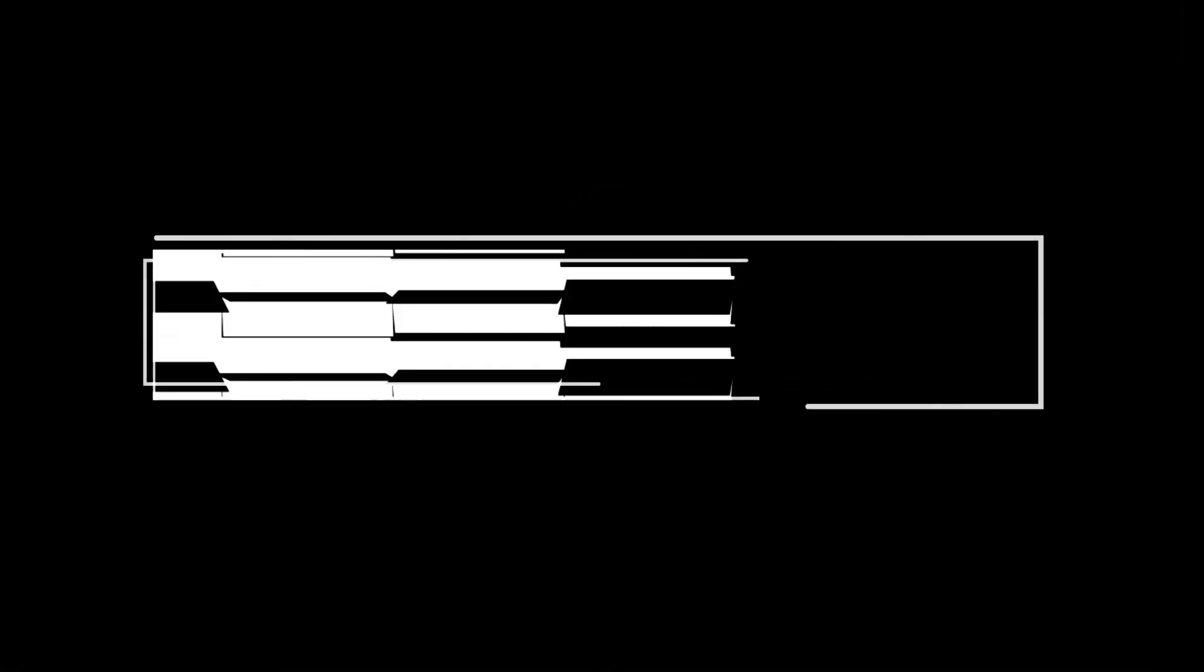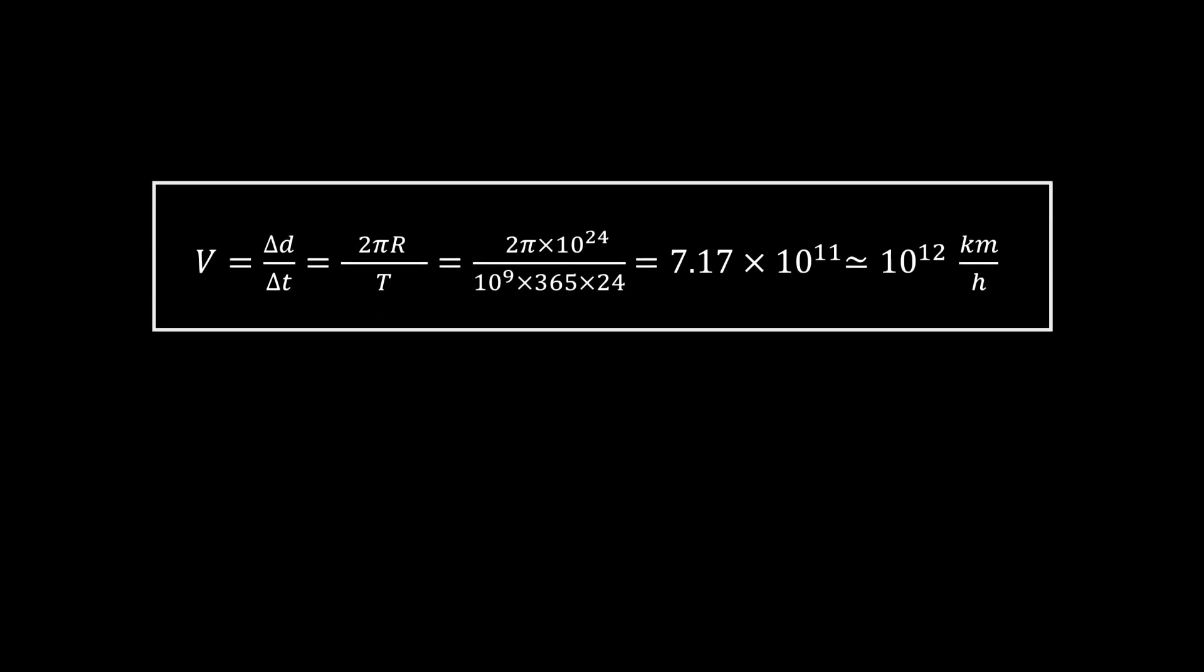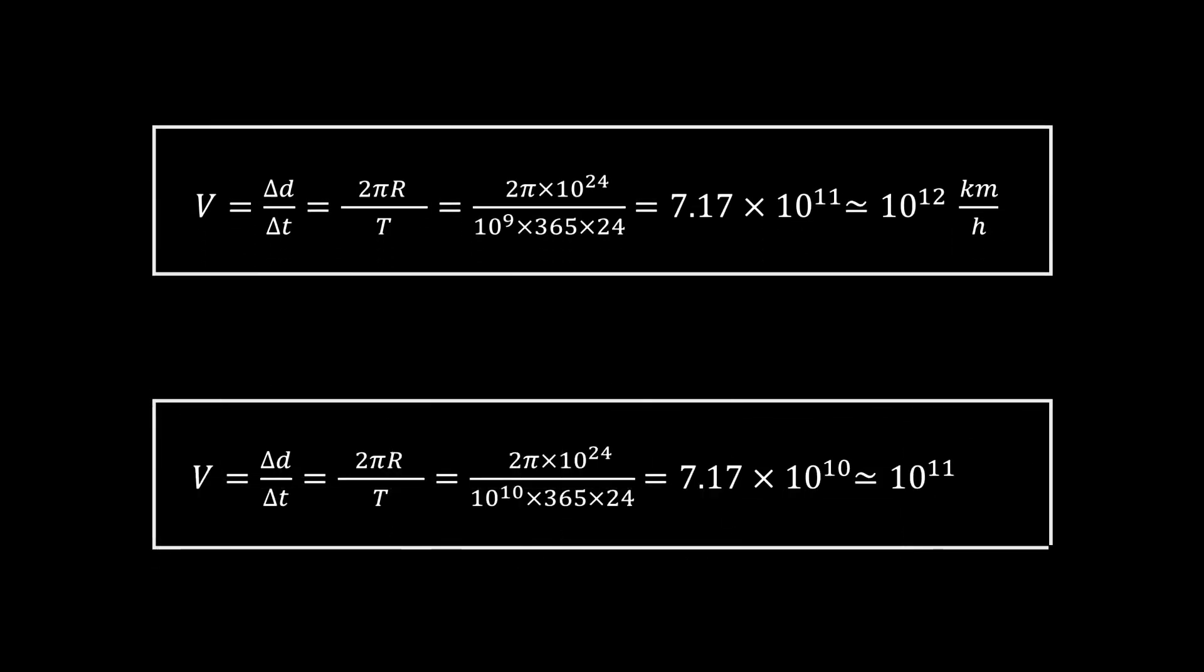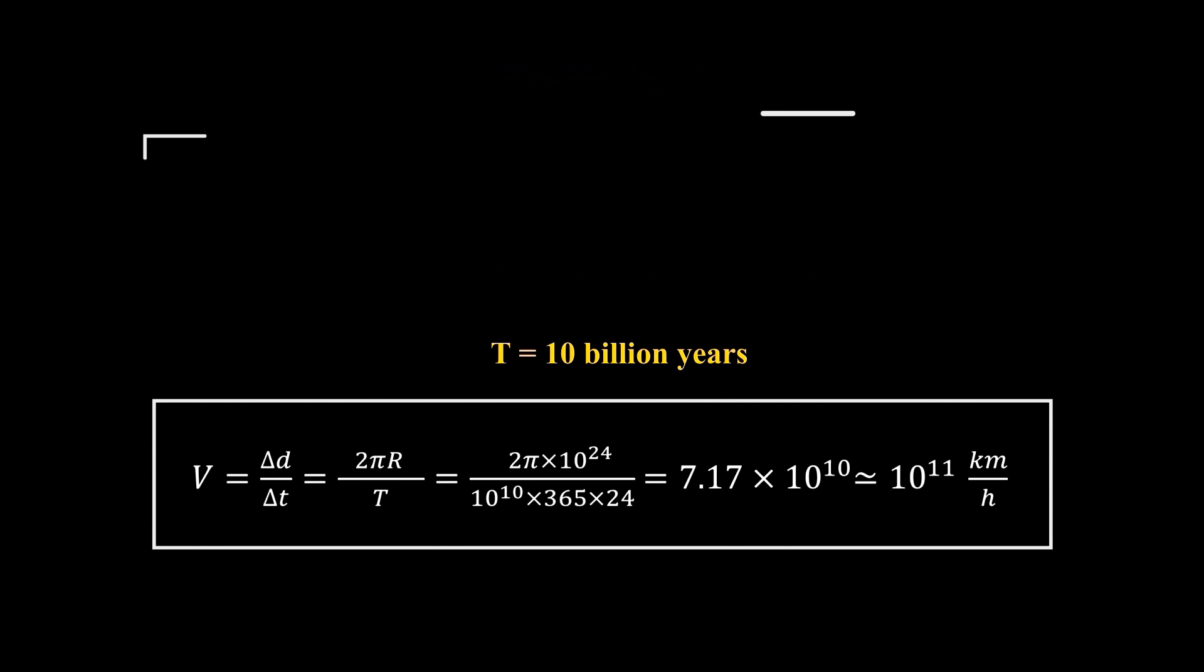By a simple calculation, we can see that the speed at the edges of the universe is approximately between 10 to the power of 11 or 10 to the power of 12 km per hour. That is 100 or 1000 times greater than the light speed, which is about 10 to the power of 9 km per hour in vacuum.